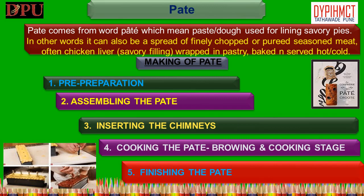Stage 5 — Finishing of the pâté: The pâté is not complete when removed from the oven — it must first be filled with aspic. Allow the pâté to rest at room temperature for 15 minutes; this will allow the juices and fat to be absorbed back. Carefully fill the chimneys with a good quality aspic jelly. Allow the pâté to chill overnight before removal and slicing.